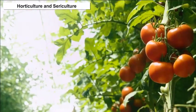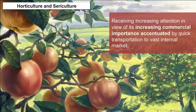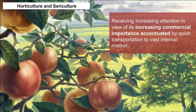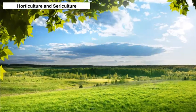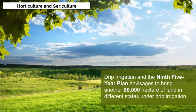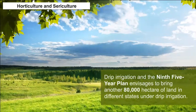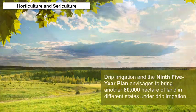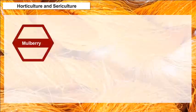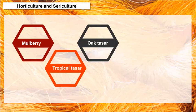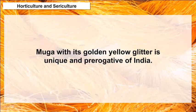Horticulture crops, particularly fruits, are now receiving increasing attention in view of their increasing commercial importance, accentuated by quick transportation to the vast internal market. More than 3 lakh hectares have been brought under drip irrigation, and the 9th Five-Year Plan envisages bringing another 80,000 hectares of land in different states under drip irrigation. India produces all 5 known silk varieties as the only country in the world: mulberry, tropical tassar, oak tassar, airai, and moonga, of which moonga with its golden yellow glitter is unique and prerogative of India.